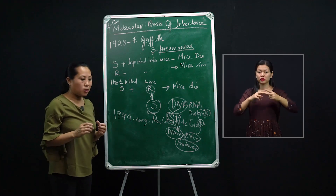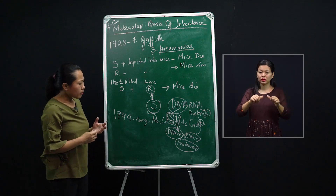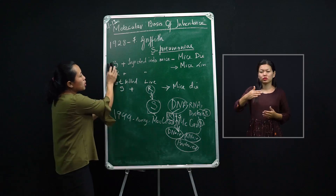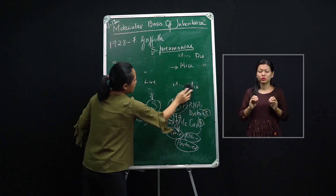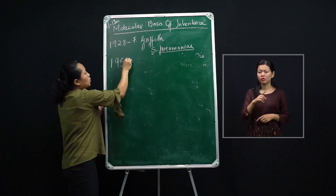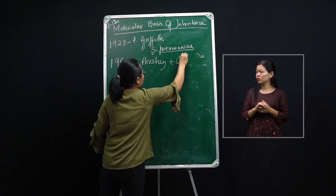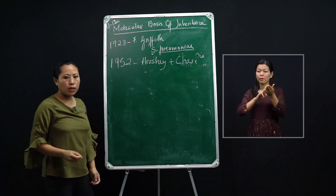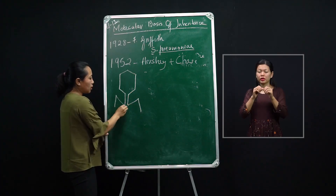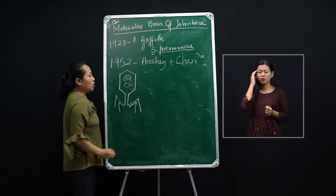Nevertheless, many biologists still could not accept this experiment. Scientists continued, and the next most notable experiment was performed by Hershey and Chase. Alfred Hershey and Martha Chase in 1952 performed the experiment using a bacteriophage to prove what is the exact genetic material of living organisms.